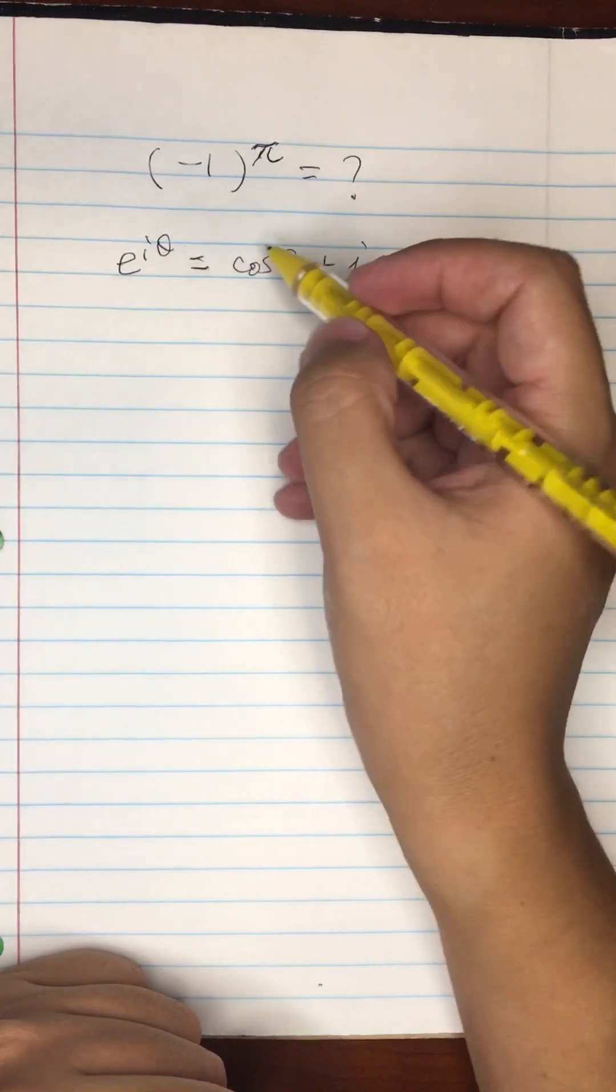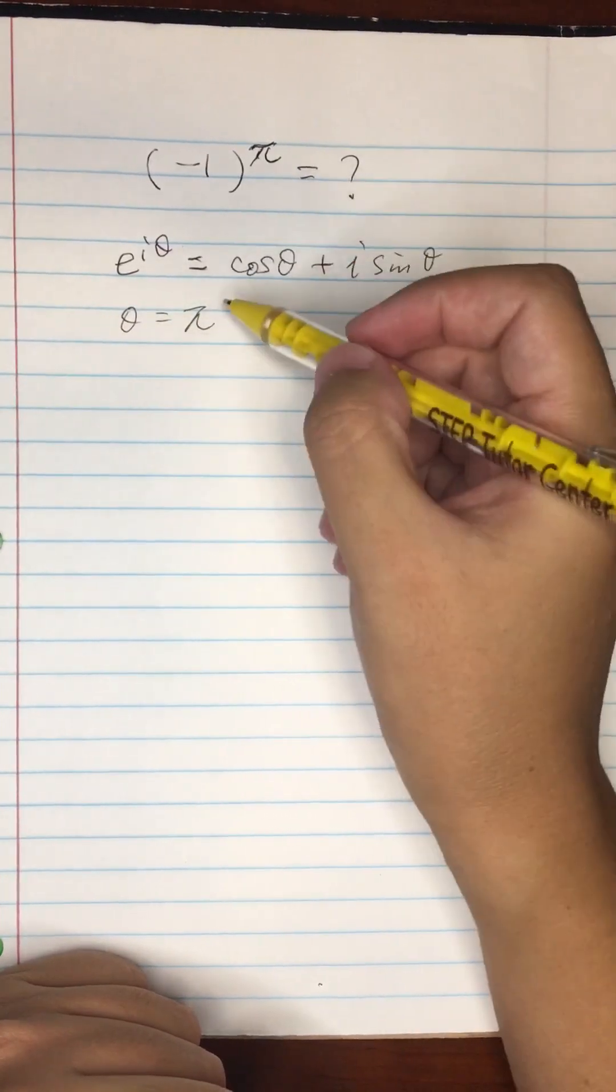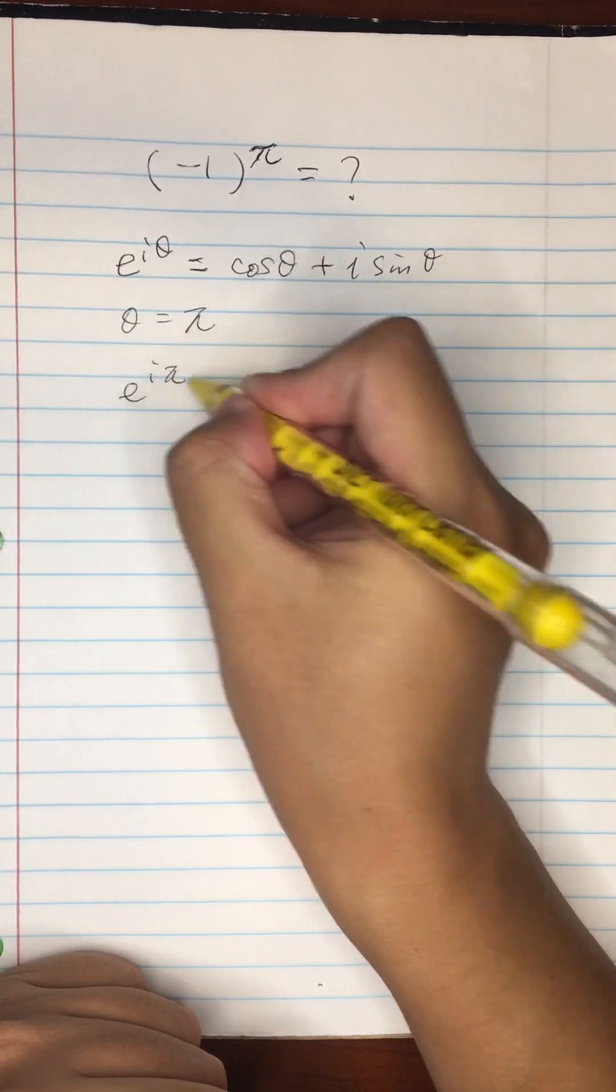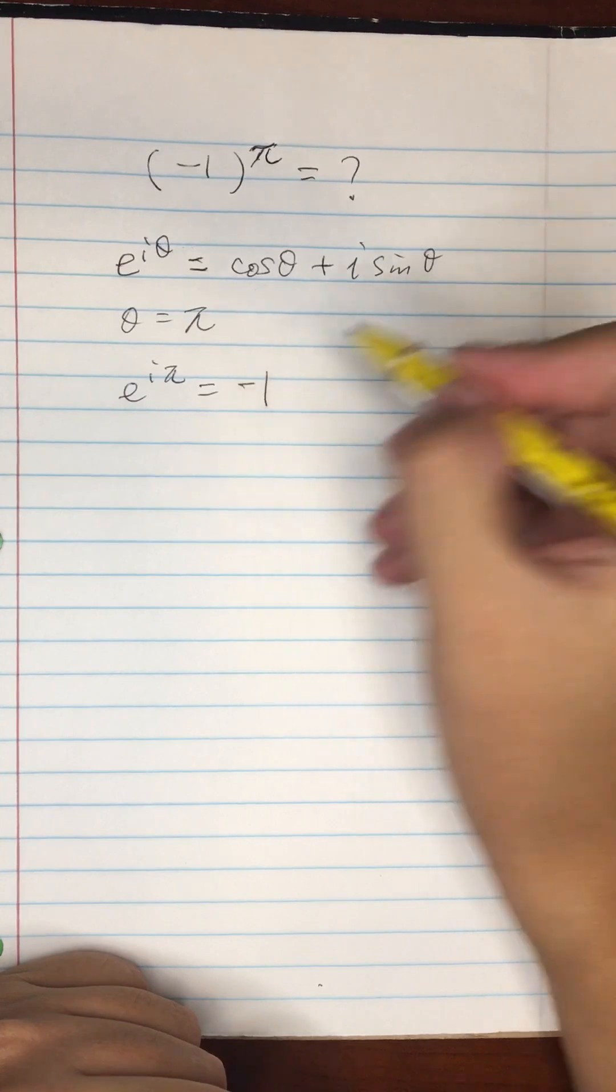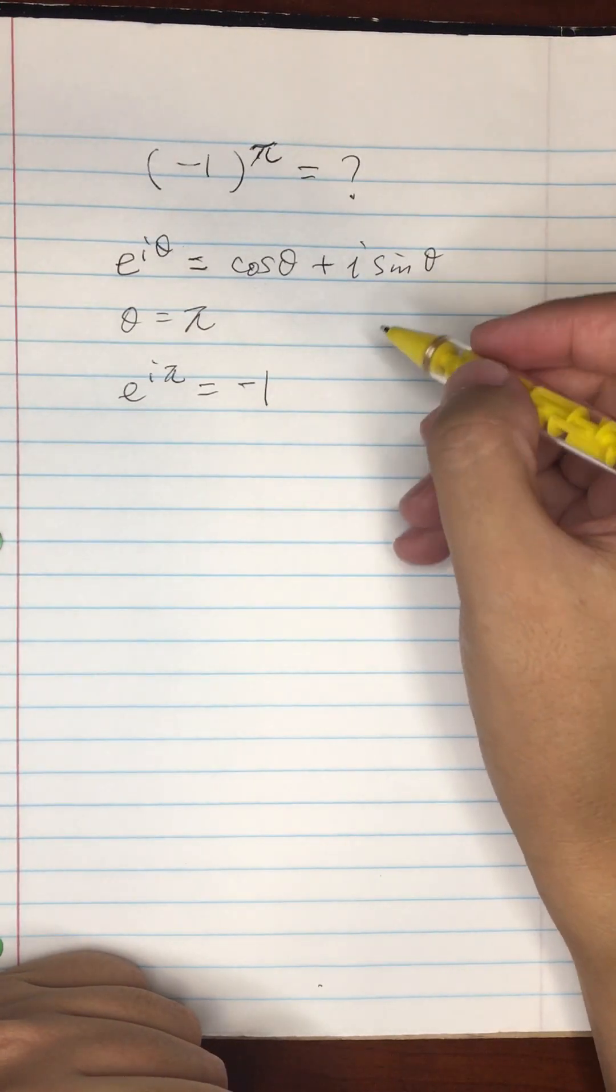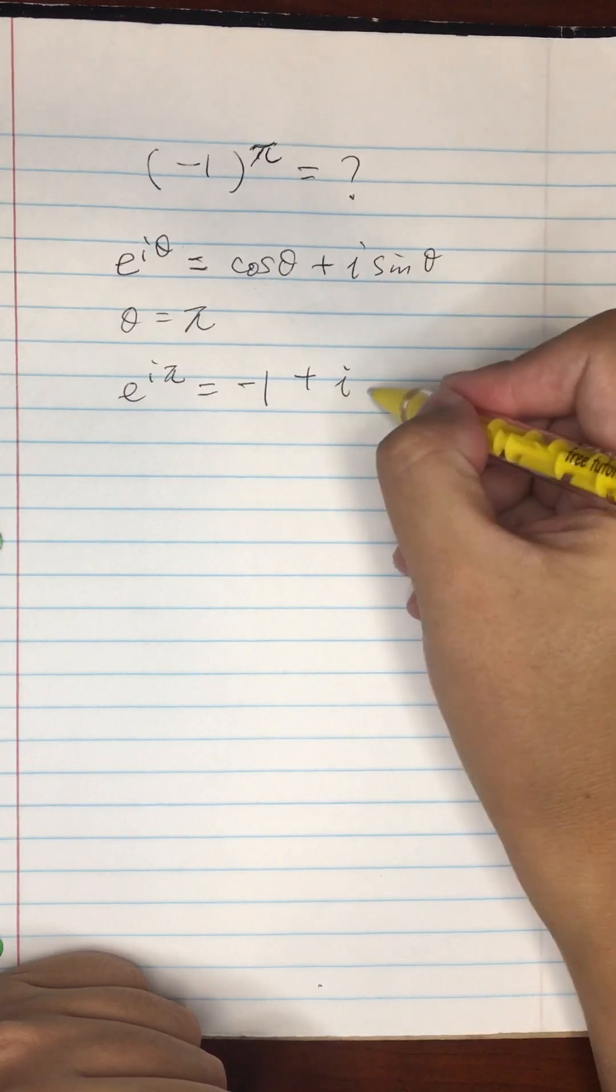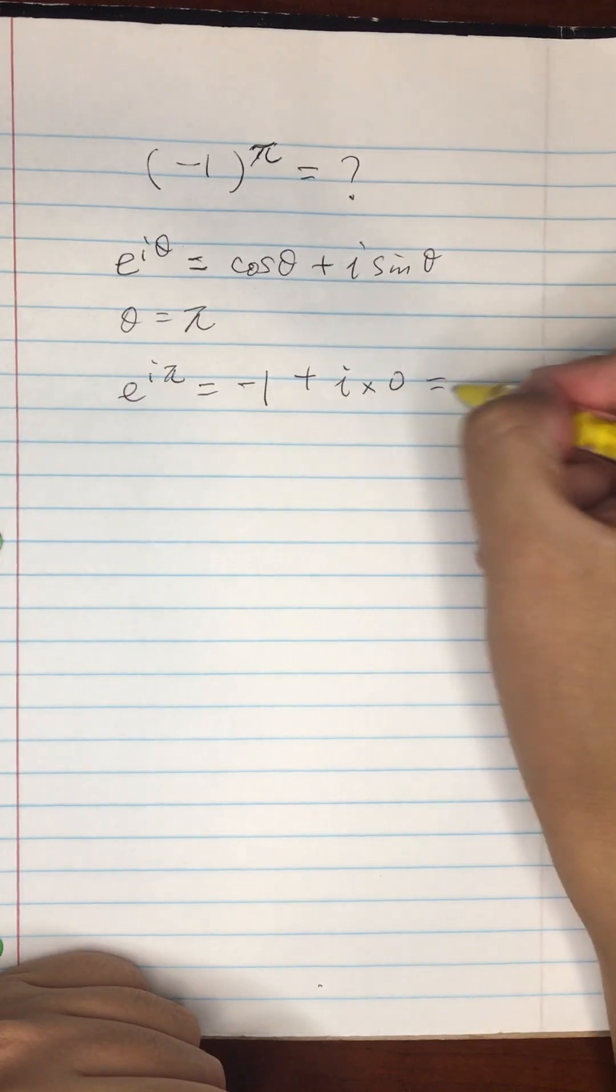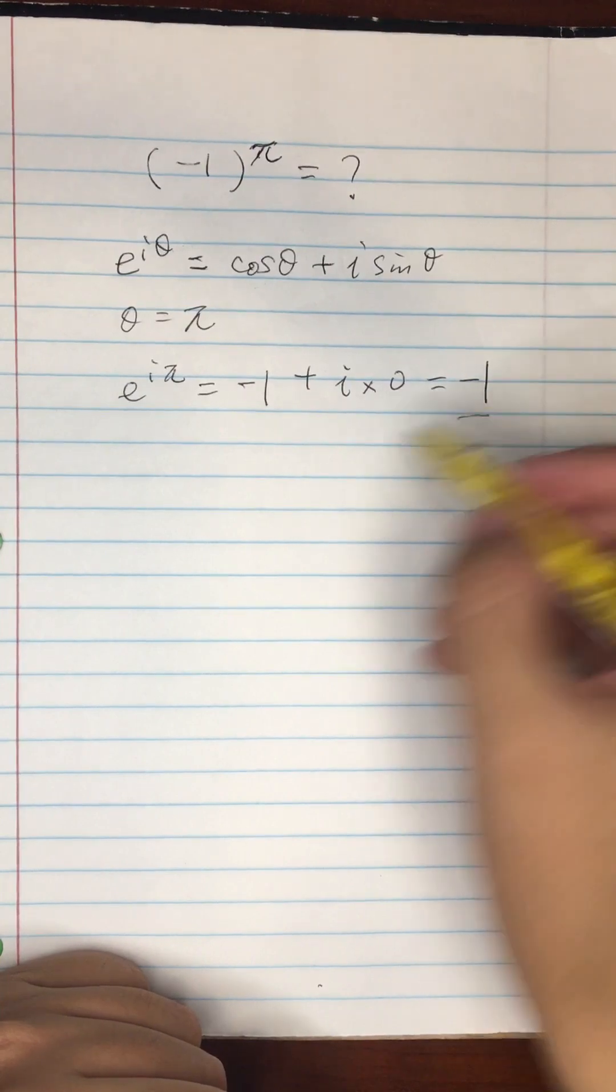So if you actually replace theta equals to pi, what you're going to get is that e to the i pi is going to equal cosine pi - that's minus one - plus i sine pi. Sine pi is going to be zero. So what we end up with is that e to the i pi is equal to minus one.